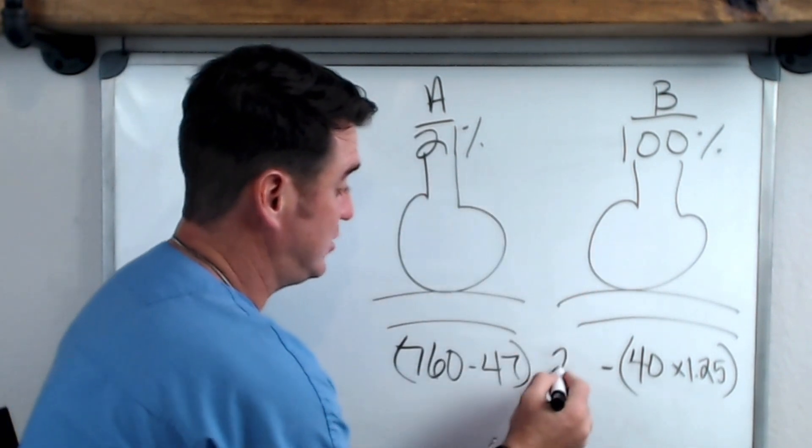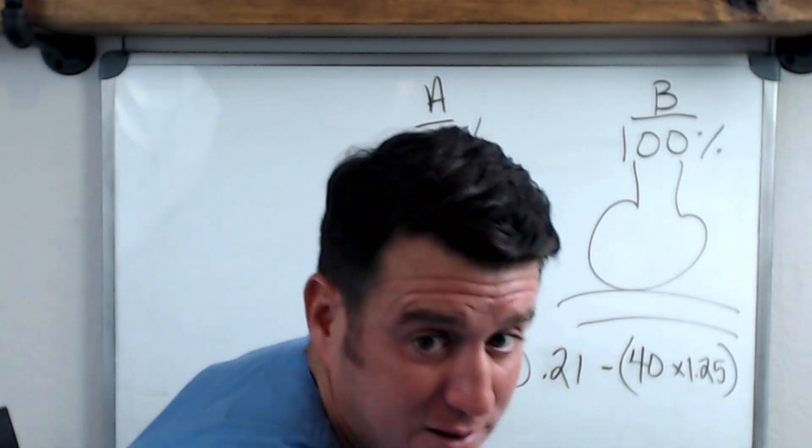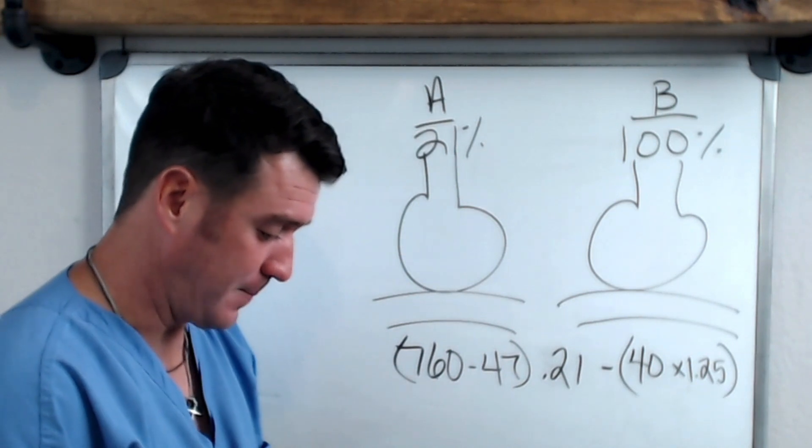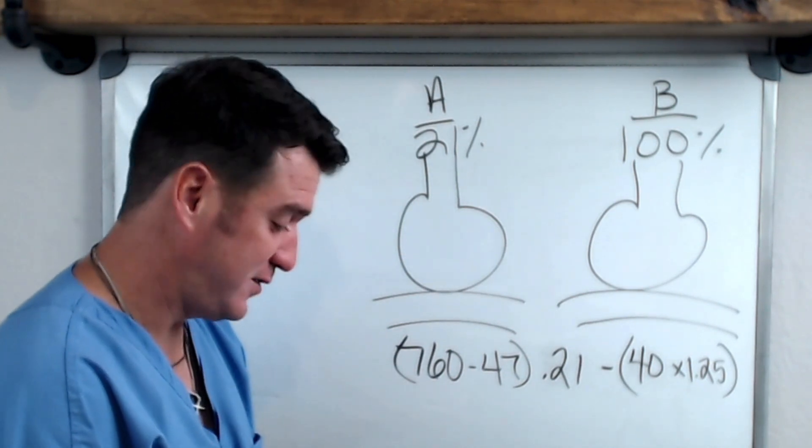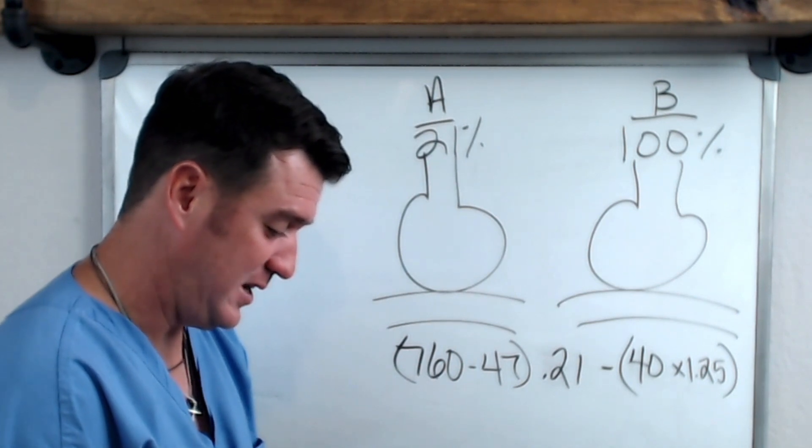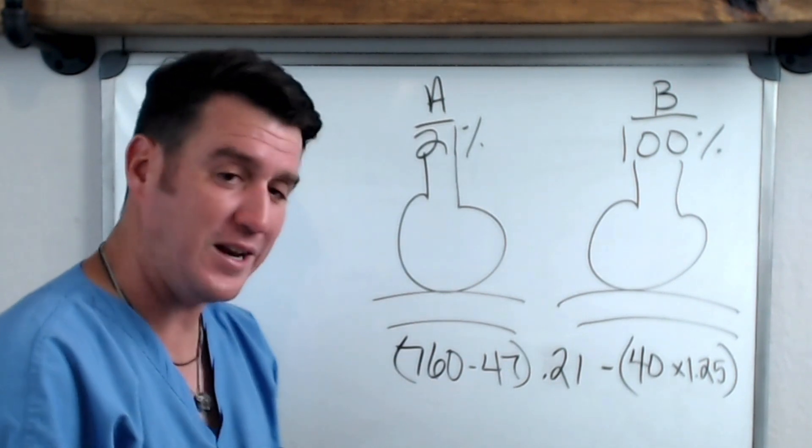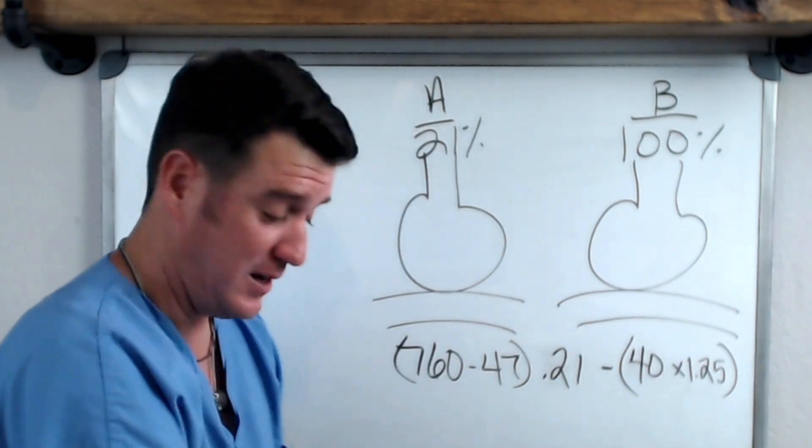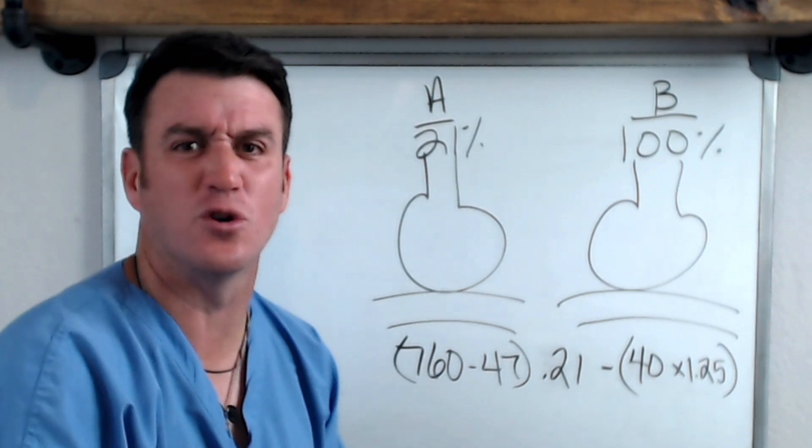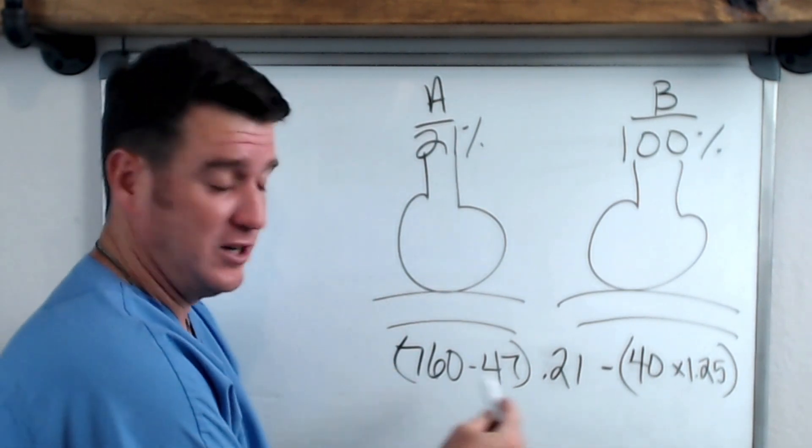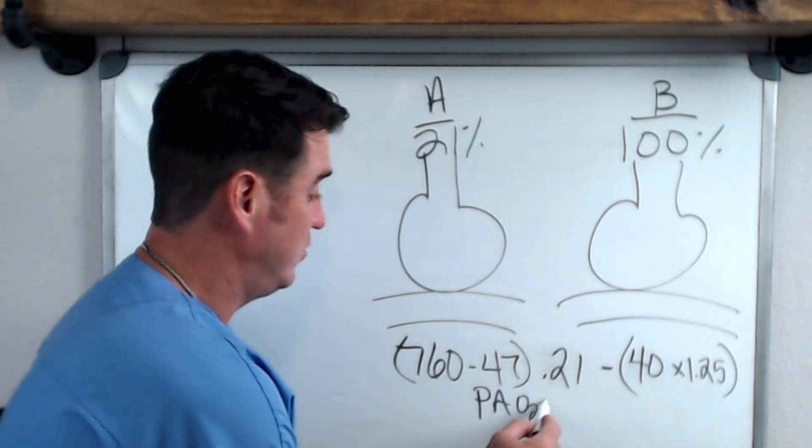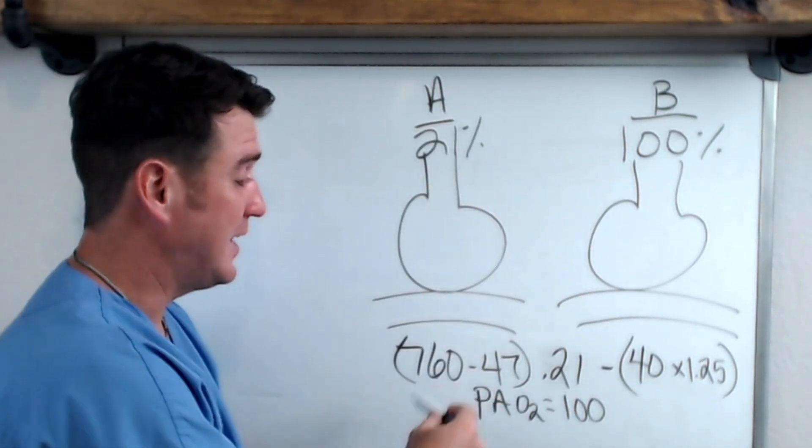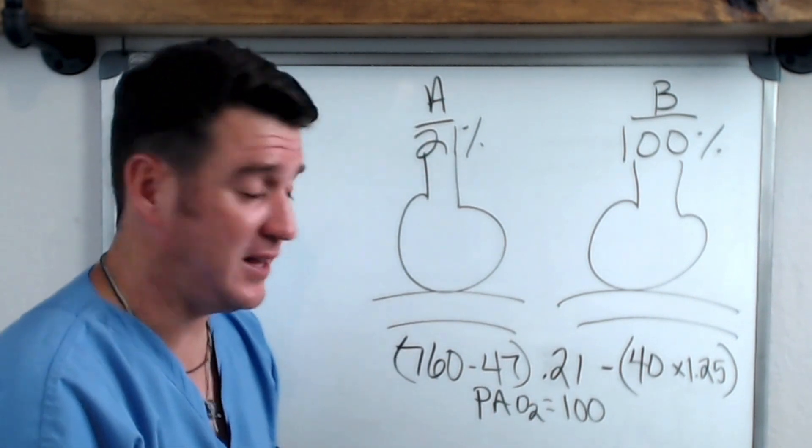For FiO2 right here we have to plug in 0.21. When we do this we're going to get somewhere right at 100. Let me do the math real quick - we're going to take 760 minus 47 which is going to give us 713 times 0.21 equals 149.7, and then from that we're going to subtract 40 times 1.25 which is 50, and we're going to get 99.7. I'm just going to round it up to 100. So when we do this math we see that our P big A O2 equals 100, 99.7. This is for patient A.